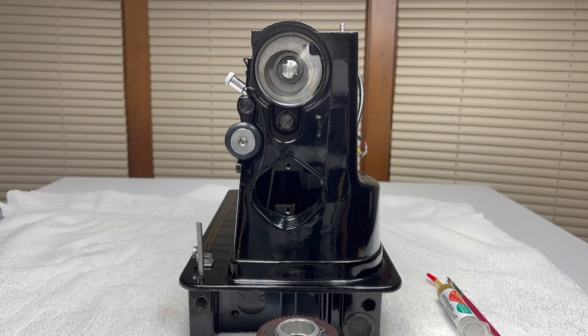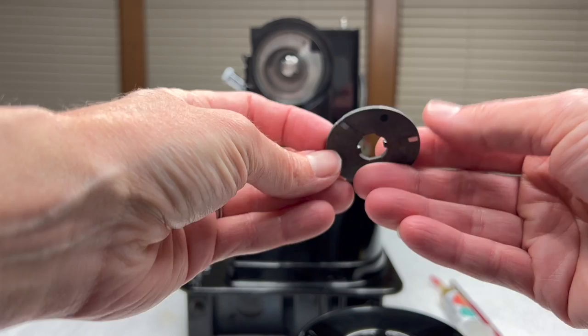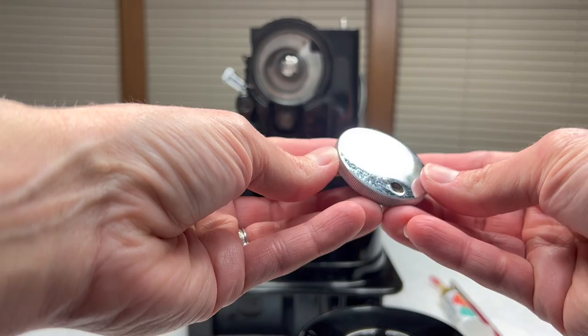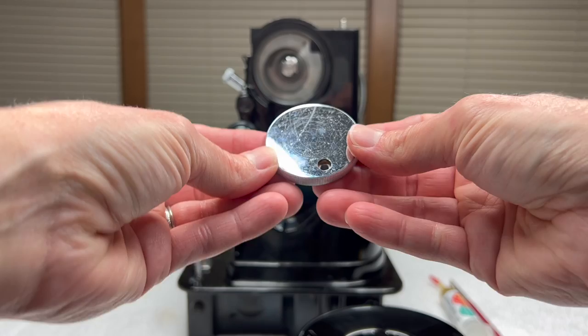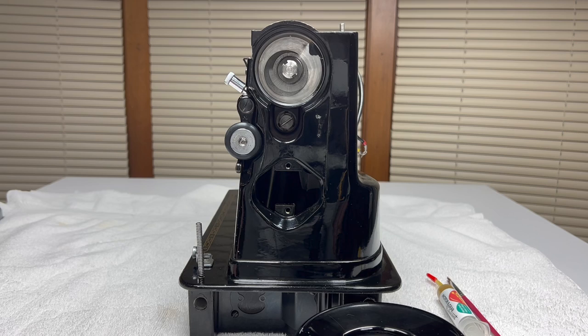So today the parts that you will need are the hand wheel itself as well as the stop-motion clamp washer, the stop-motion clamp nut, and the stop-motion stop screw. So just four parts and of course your sewing machine itself.